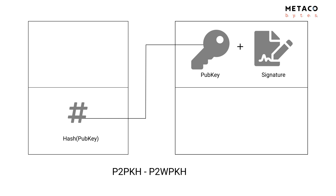Approximately at the same time, another approach emerged: instead of putting the public key inside the output, you put the hash of the public key. This is what P2PKH and P2WPKH do. You can see a hash as a commitment to the public key — when the transaction with this output is published, nobody can change the public key, since any difference would produce a completely different hash. You still need to reveal the public key and signature when spending, but this model is more efficient for the UTXO set because the hash of the public key is about 12 bytes shorter than the public key itself.